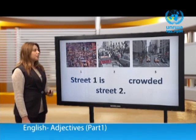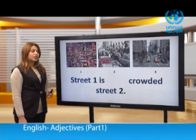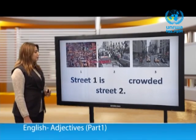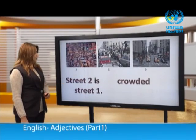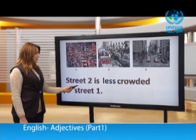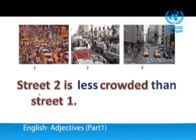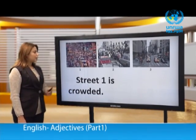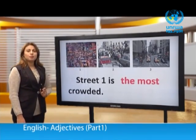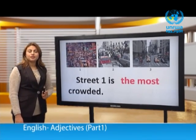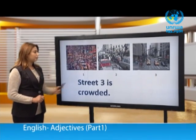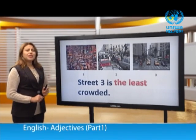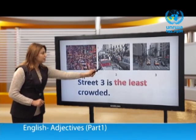Let's look at these three streets. Street one is very crowded. Street one is more crowded than street two. Street two is less crowded than street one. Street one is the most crowded — this is called superlative, comparing one with a group. Street three is the least crowded.